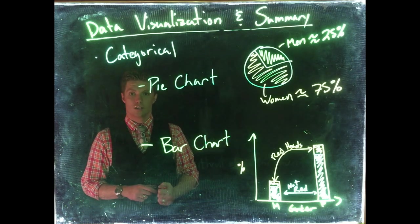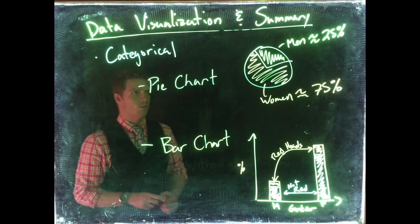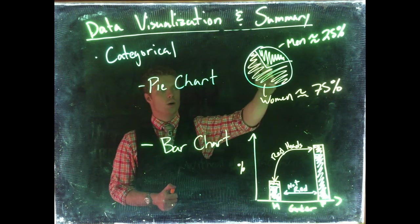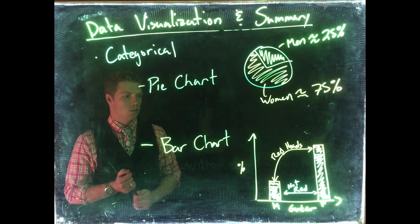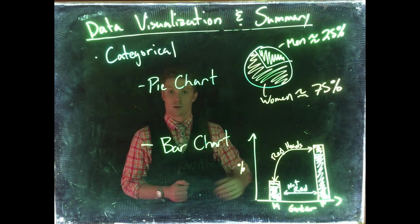But these both are very common ways in order to communicate our categorical data very quickly. Pie charts can quickly give us a grasp of proportions and then the bar chart can do that as well but also add in comparison by groups.